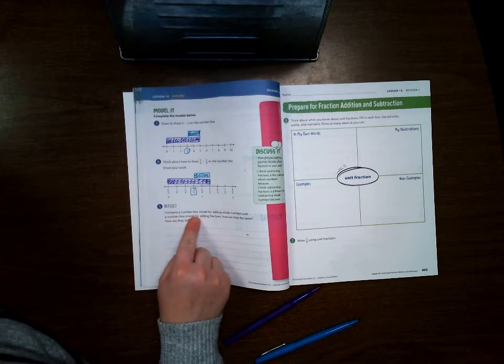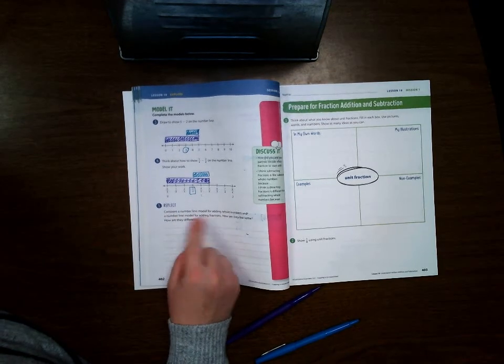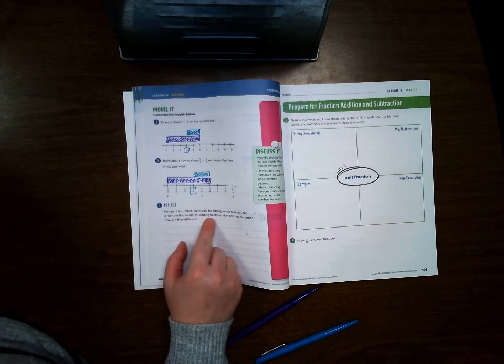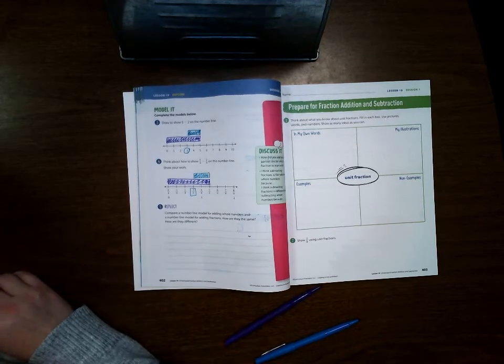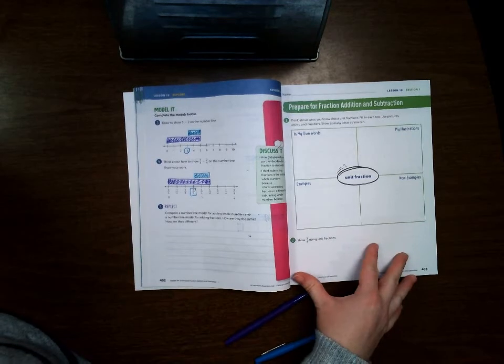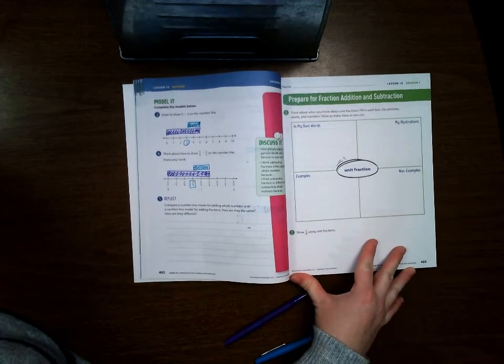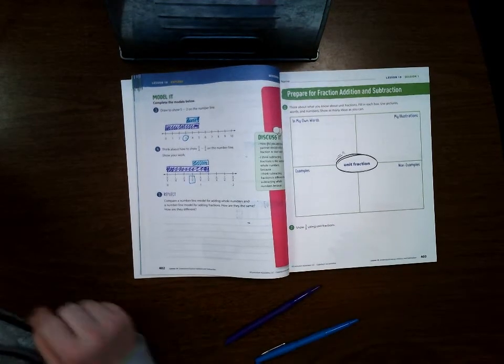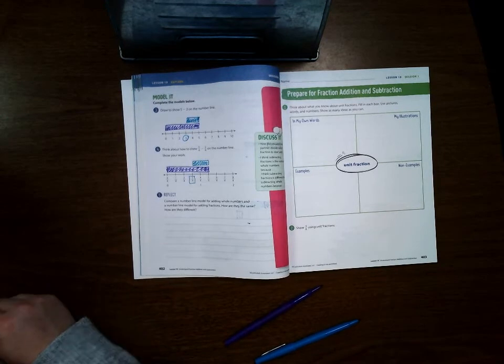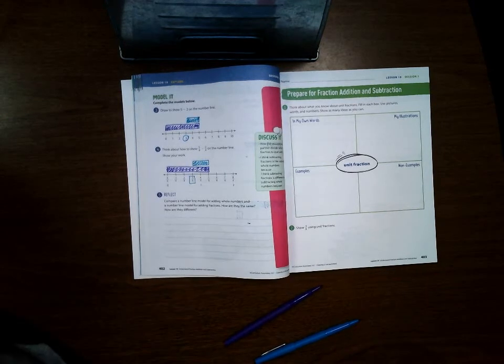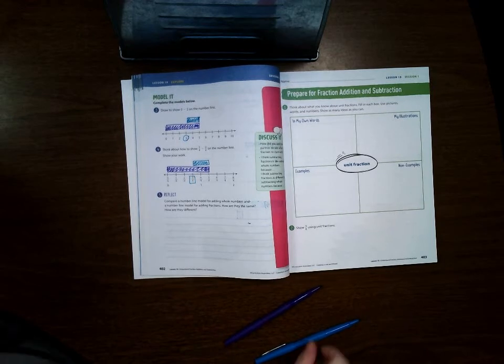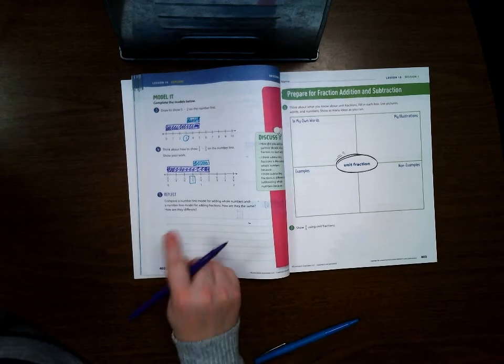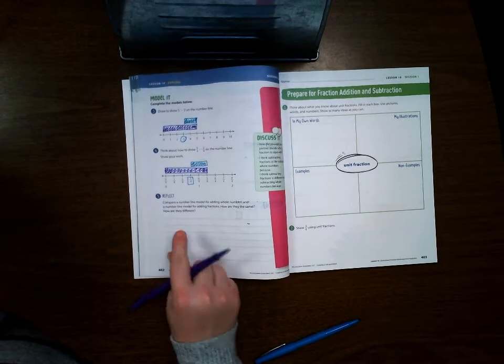So now this question on here is: compare a number line model for adding whole numbers and a number line model for adding fractions. How are they the same and how are they different? Go ahead and take a minute. You can pause this video and answer that question for yourself, because I want you to think about that on your own.